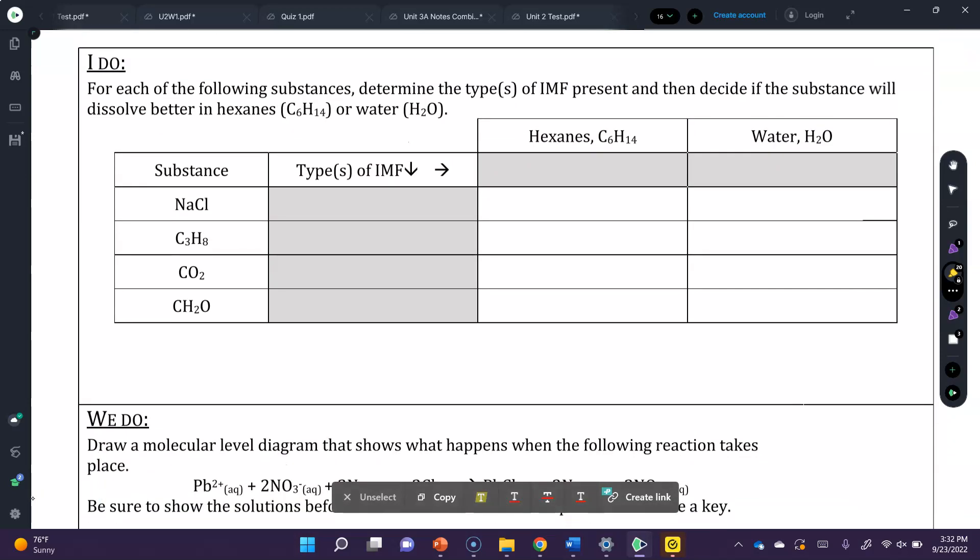For our IDU, for each of the following substances, determine the types of intermolecular forces present, then decide if the substance will dissolve better in hexane or water. We are going to fill in the types of intermolecular forces for each substance and then determine if they will dissolve. Sodium chloride has ions. C3H8, those are all non-polar bonds, so that's London dispersion force. CO2, while the bonds are polar, they cancel out, so that's London dispersion force.